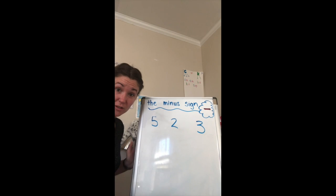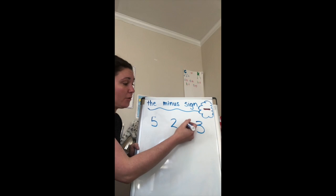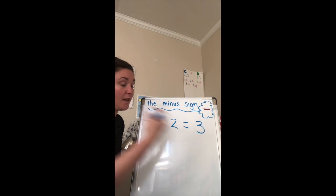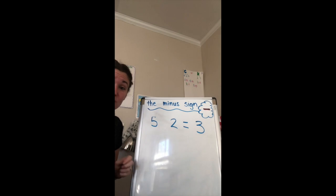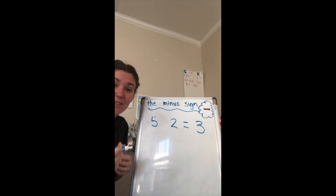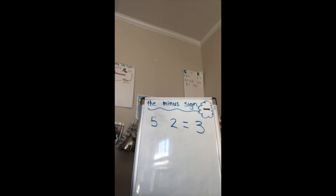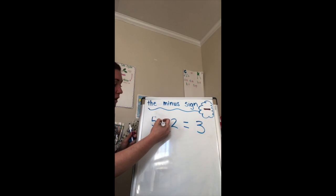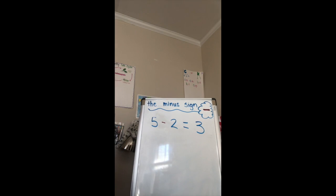Now when we did addition we learned that we use the equal sign to show us the answer and we did the plus sign to show us that we were adding but instead of adding we're subtracting. So we're gonna use this special symbol called the minus sign. So now this math sentence says five minus two equals three.